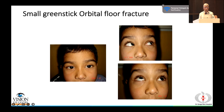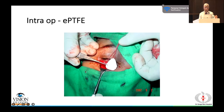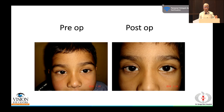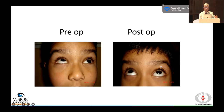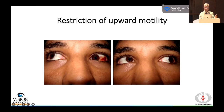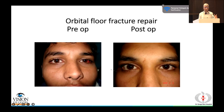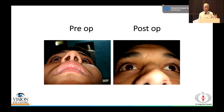A green-stick orbital fracture or 'white-eye' fracture in a child with upward restriction and incarceration of contents is tackled urgently. An implant is placed to achieve good correction with restoration of upward motility. For enophthalmos and ocular motility restriction, all incarceration must be removed and volume restored; after repair, correction of enophthalmos and motility can be achieved.